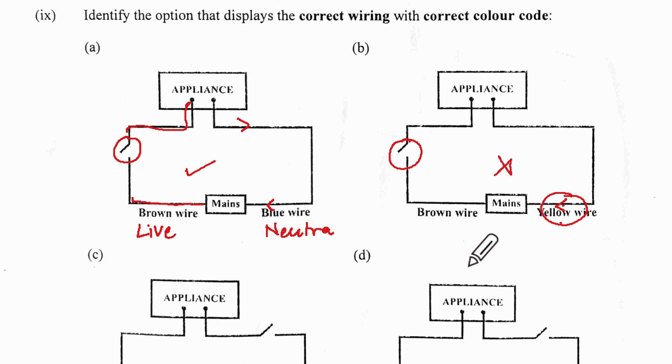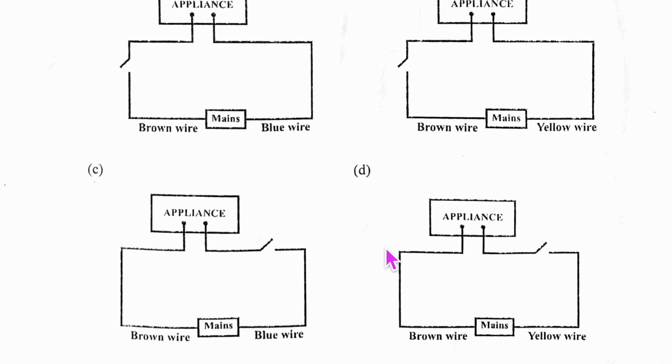The switch is connected in blue, that means neutral, which is wrong. And here switch is connected to earth, which is again wrong. The switch has to be connected to the line, so your option A is the correct option.